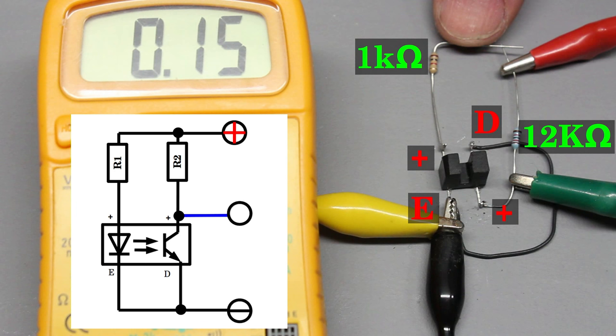With the 12 kiloohm resistor on the receiver side and the 1 kiloohm resistor on the LED side, the device can be operated at a 5V DC power source.